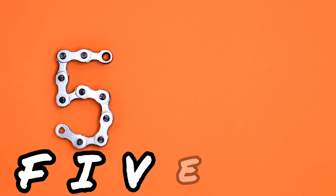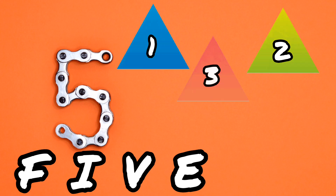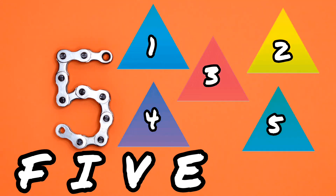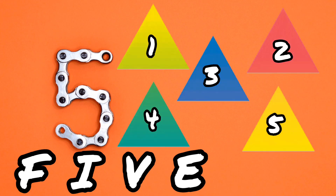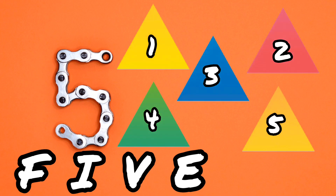Five. This is number 5. F-I-V-E. Five. Now it's time to count. So how many shapes are there? Five. And what shape is this? Triangle. Yes. There are five triangles.